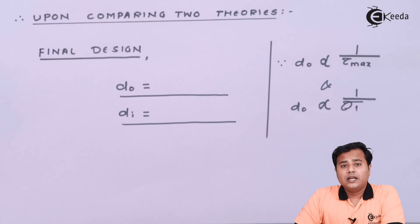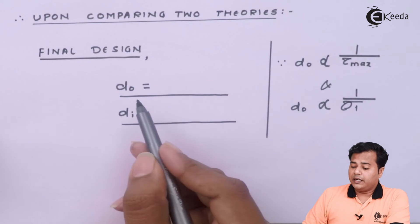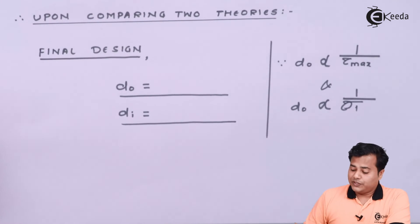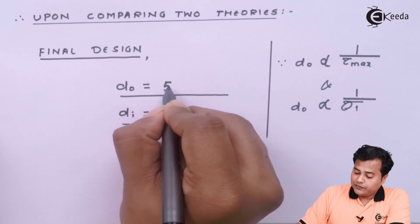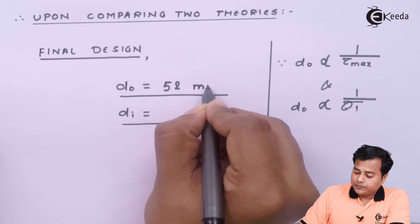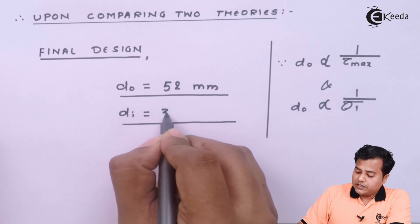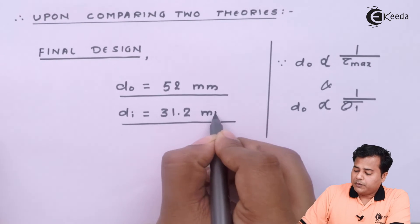So in that case the more the value of diameter I have, safer will be my component. If smaller the value I have it will not be safe. And that's why I will go for the greater values of the considered values which we know that outer diameter is 52 mm and the inner diameter is somewhere around 31.2 mm.